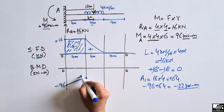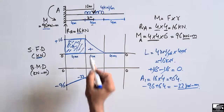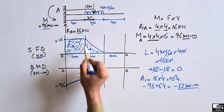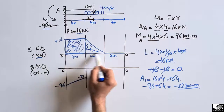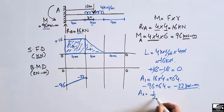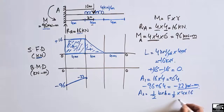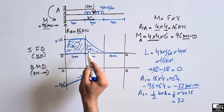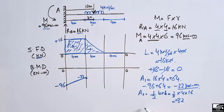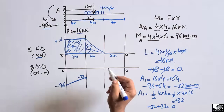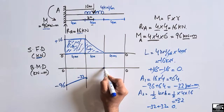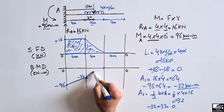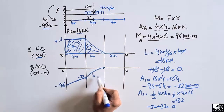The second shear box, A2, is a triangle with height 16 and base 4, so its area is half times base times height equals 32. This area is also positive. So minus 32 plus 32 equals zero — the bending moment is zero at the free end. We draw the line from minus 32 back up to zero at this point.